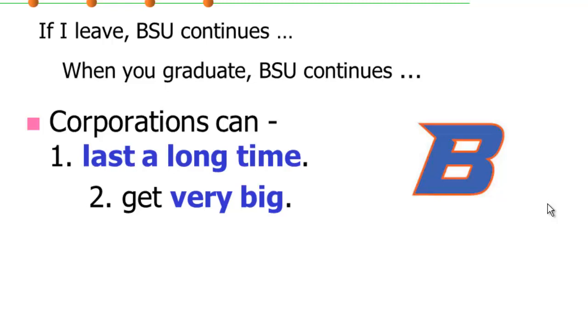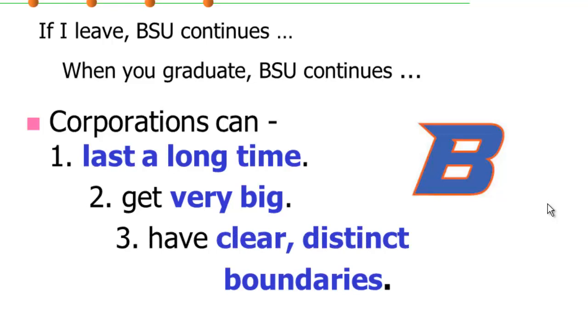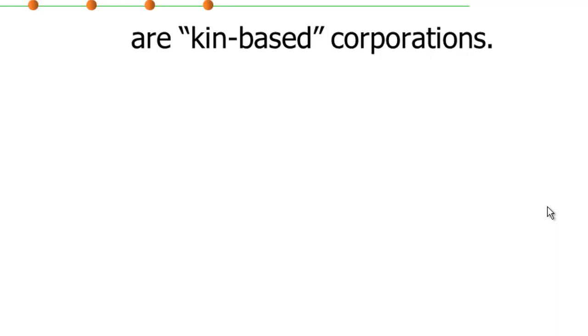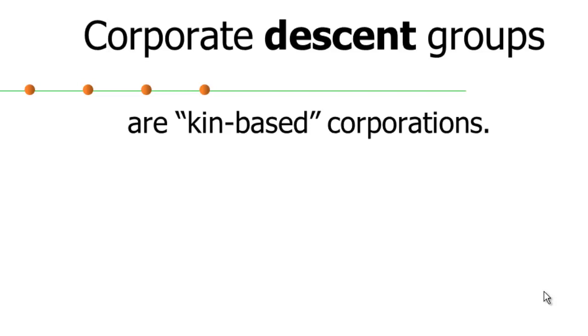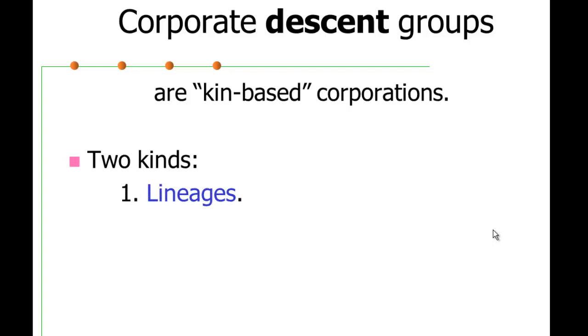And lastly, it's possible using unilineal descent for a corporate social group to define very clear boundaries about who belongs to it and who does not. So a corporate descent group is just a corporation based on kinship. So we have here a theory of corporate social groups that applies to state-organized societies like the United States, as well as small-scale kin-based societies. And the idea here is that corporations in small societies are kin-based. And there's two kinds of these. One is called a lineage and the other a clan. We're not going to go into this in great detail.